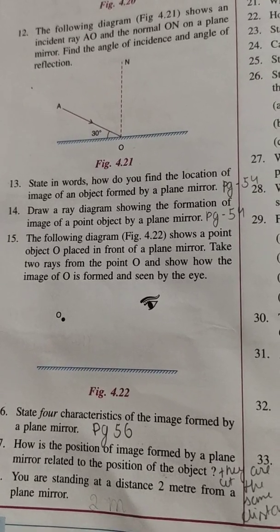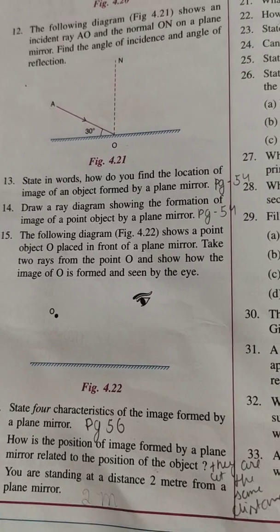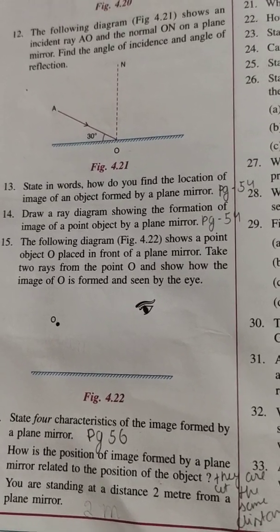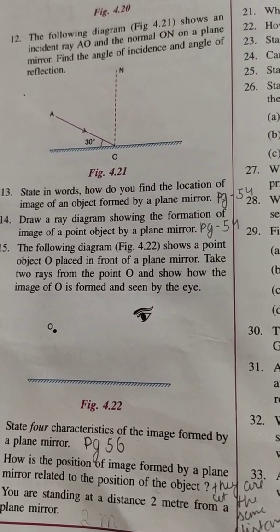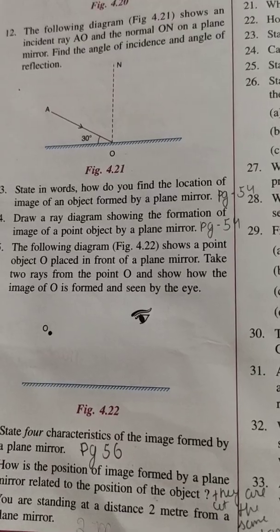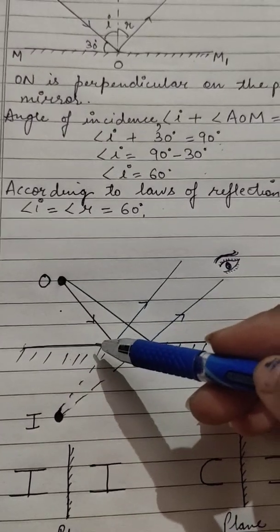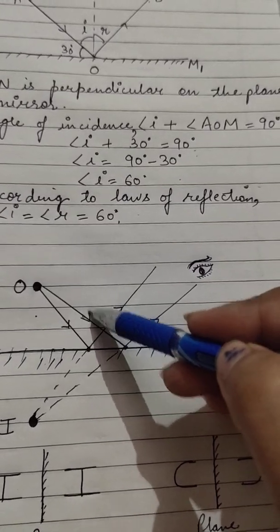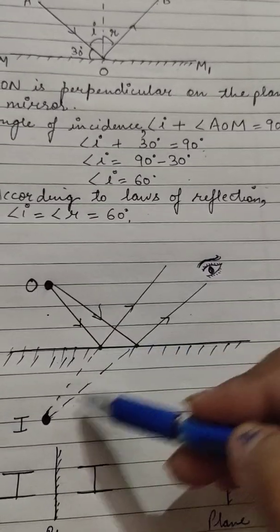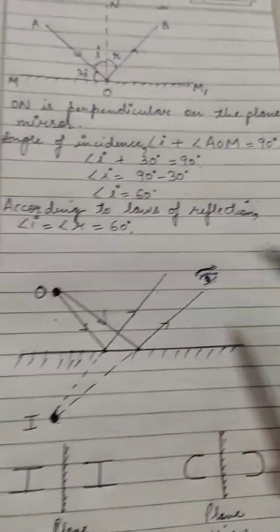Question number 15: a point object O is placed in front of a mirror. Take two rays from point O and show how the image is formed and seen by the eye. In the diagram, I have shown the plane mirror with the object in front of it. Two incident rays are taken from the object, and the reflected rays, when produced backward, form the virtual image behind the mirror.